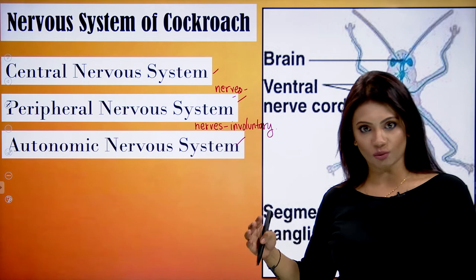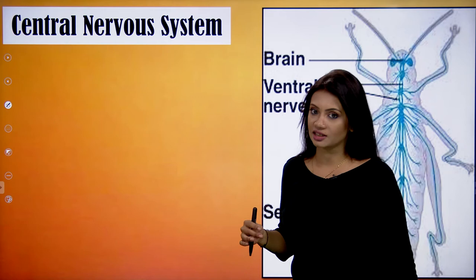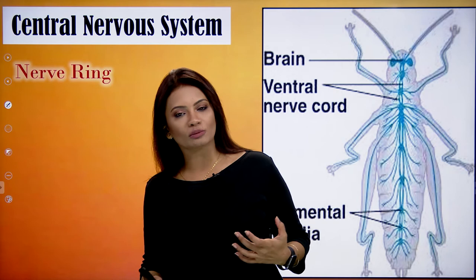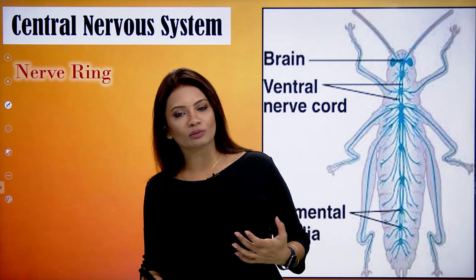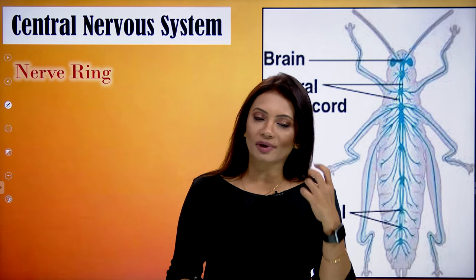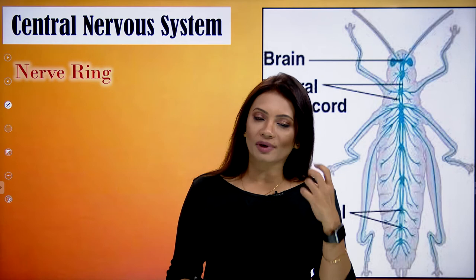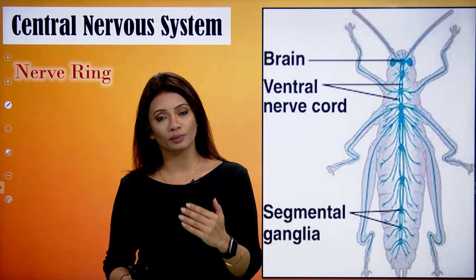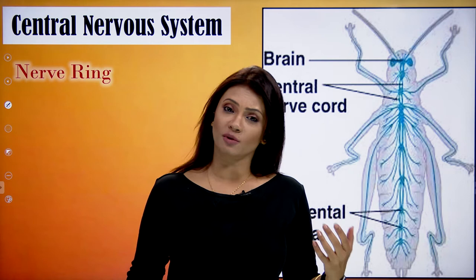We will begin with the central nervous system of the cockroach. In the human CNS we have the brain and spinal cord. The cockroach, being an invertebrate, does not have a true brain, but we call a structure in its nervous system the brain. We can say that in the CNS of a cockroach, they have the nerve ring and the nerve cord. The nerve cord is a double nerve cord and it is completely comprising of ganglions.